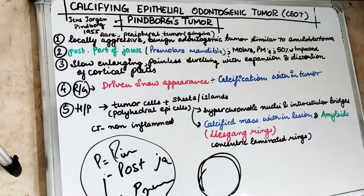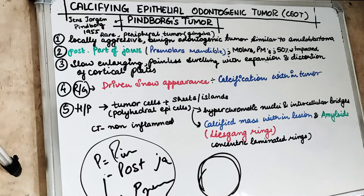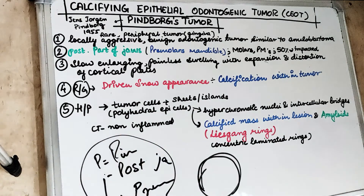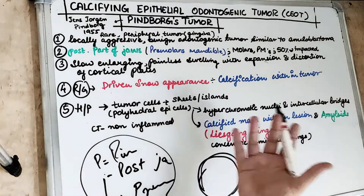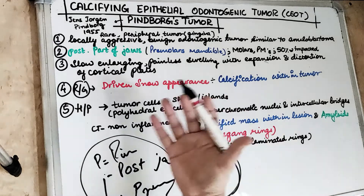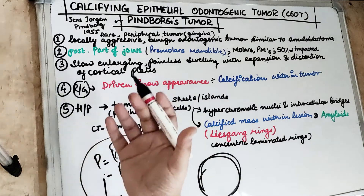Clinically, the tumour presents as a slow-enlarging, painless swelling with expansion and distortion of the cortical plate. It is most commonly found in the posterior part of the jaw, particularly in the premolar-molar region.